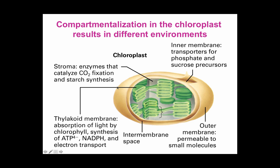The chloroplast is a compartmentalized organelle, resulting in multiple different microenvironments. You have the outer membrane permeable to small molecules, an intermembrane space, and an inner membrane — the actual selectively permeable barrier preventing movement of molecules in and out. You have transporters for phosphate and sucrose precursors allowing molecules to move in and out. Within the chloroplasts, you have the thylakoid membranes, where the absorption of light, synthesis of ATP and NADPH, and events of the electron transport chain occur. In the stroma, the cytoplasm of the chloroplasts, you have the enzymes that catalyze carbon dioxide fixation and starch synthesis.